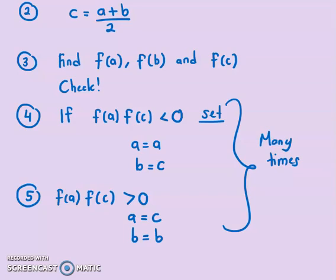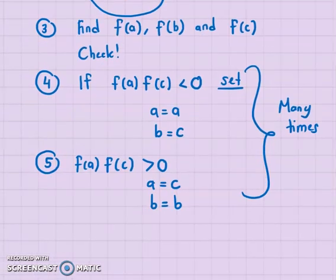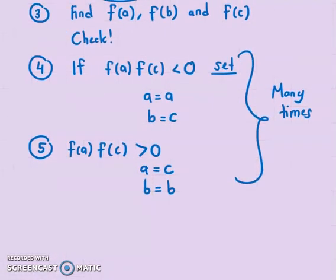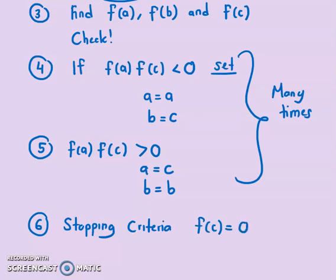We do the iteration many times. Each time, we find C = (A + B) / 2, check the condition, and update the interval until the stopping criteria is satisfied. The stopping criteria can be F(C) = 0, or if an epsilon value is given — a very small number — we stop the iteration when that condition is met.